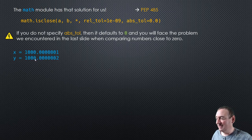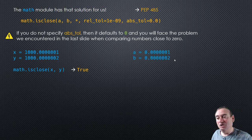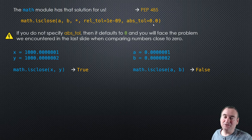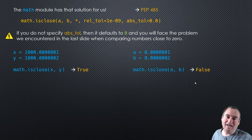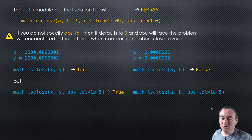So a word of warning: if you do not specify the absolute tolerance, it is zero, and you'll face that problem we saw when using relative tolerances with numbers close to zero. Let's take a look at an example: two numbers quite far from zero — if we call math.isclose with defaults, that evaluates to true, which is great. Now two numbers close to zero — math.isclose evaluates to false because the absolute tolerance is zero, creating a problem with relative tolerances.